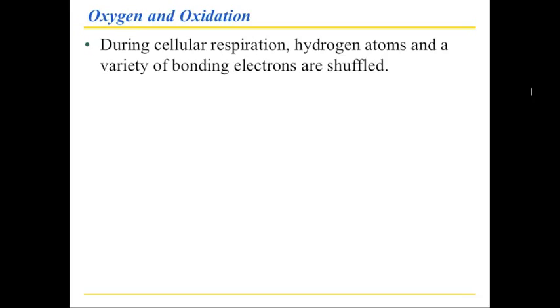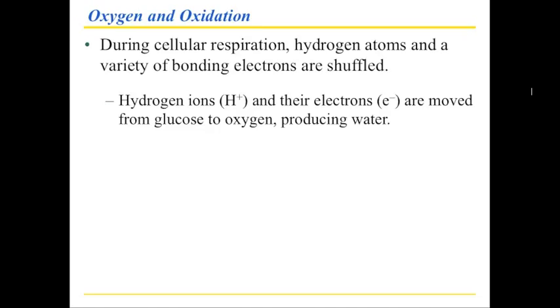So the secret of cellular respiration is how to gently, carefully move these hydrogen ions, that's what H+ means, and the electrons, E-, from glucose, that's the beginning point, to oxygen, that's the end point, and producing water along the way. It's important to remember where we came from and where we're going. So in this case, we can say glucose is the starting point and oxygen is the end point. And between those two, that's where we have all these little arrows. So we're going to track hydrogen ions and electrons as they travel from glucose to oxygen.